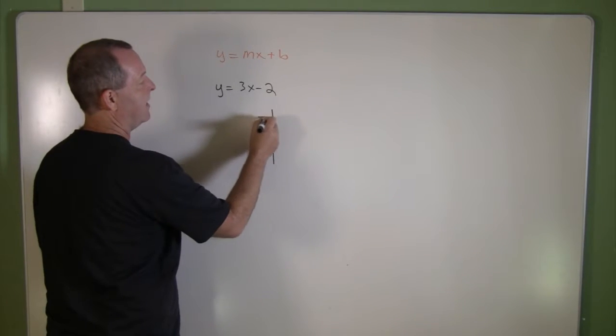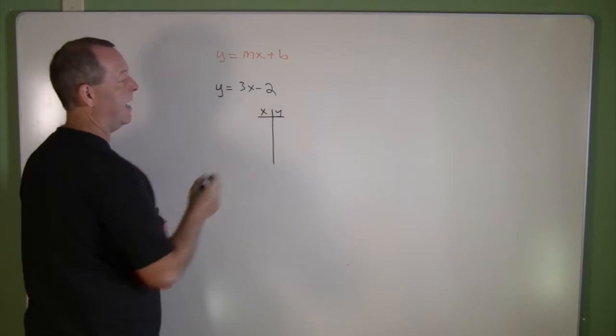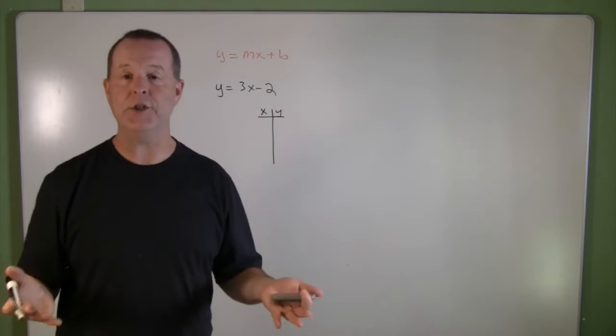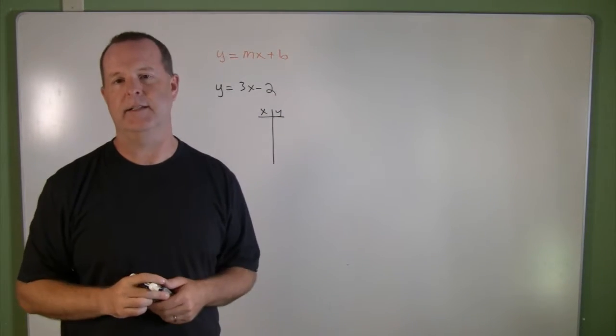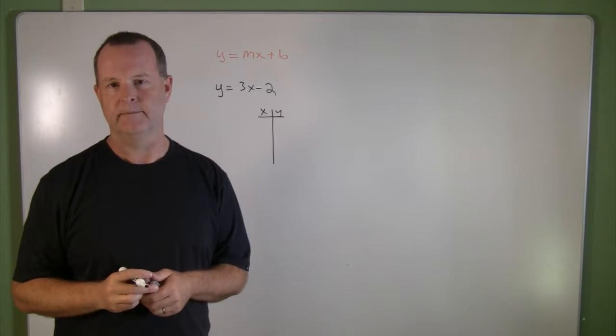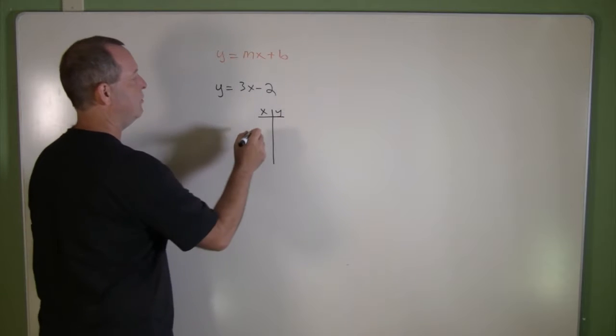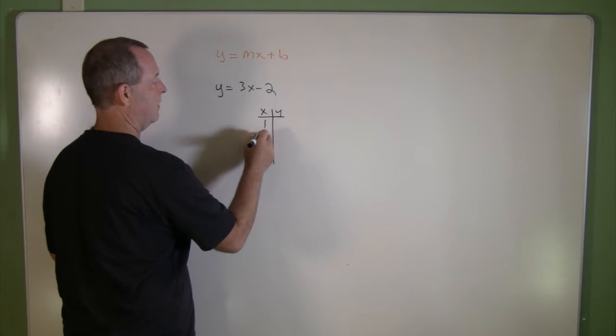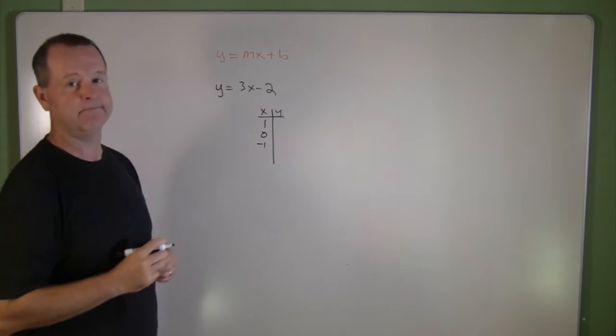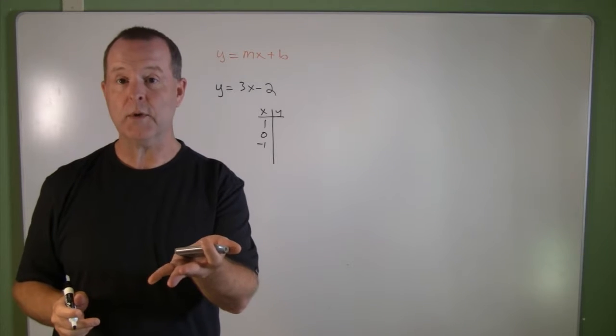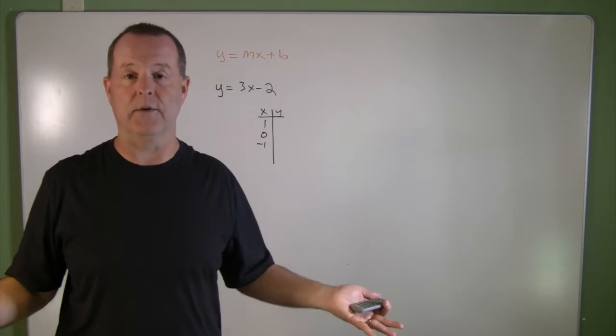The strategy that I like is to draw an xy table. And I like to choose any values of x that we want. My favorite values of x, I love choosing 1, 0, and negative 1. You may choose those three. You may choose a different value. It doesn't matter.